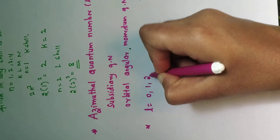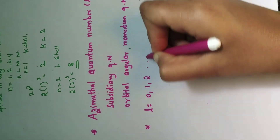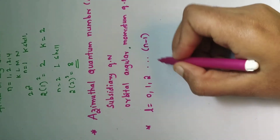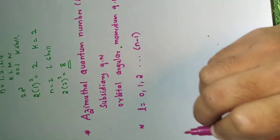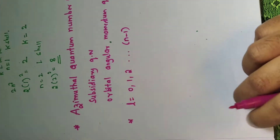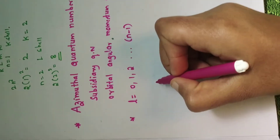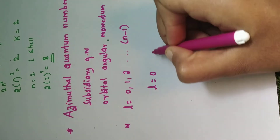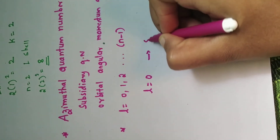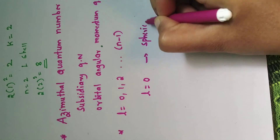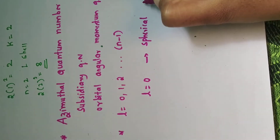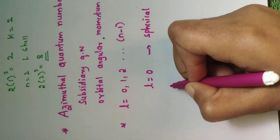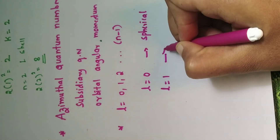The azimuthal quantum number has values from l = 0, 1, 2, up to n minus 1. The azimuthal quantum number depends upon the principal quantum number. When l = 0, it represents a spherical orbital (S orbital); when l = 1, it represents a dumbbell orbital (P orbital).